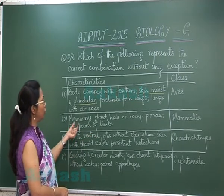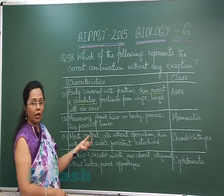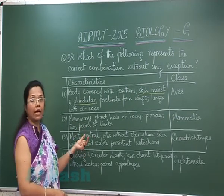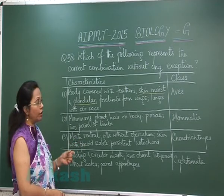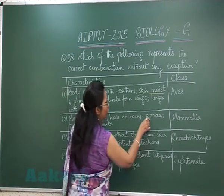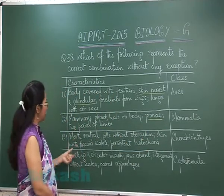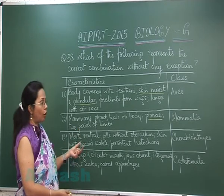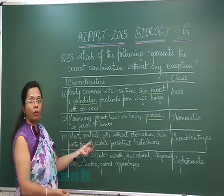The second option includes mammary glands, hair on the body, pinnae, and two pairs of limbs. Pinna is certainly a mammalian character, but it is not found in all mammals — it is absent in egg-laying mammals and also in aquatic mammals like whales and dolphins. So this option also has exceptions and is not correct.